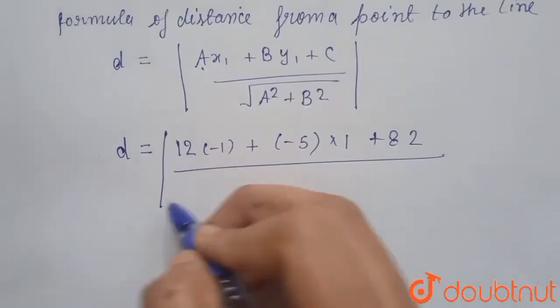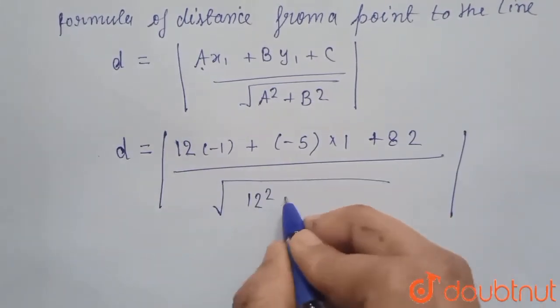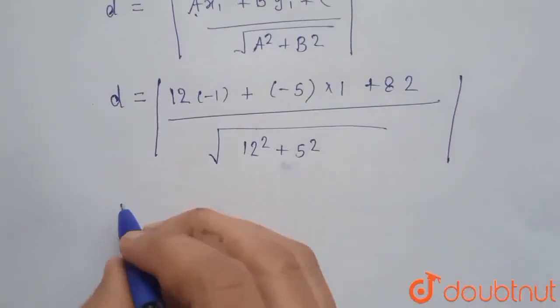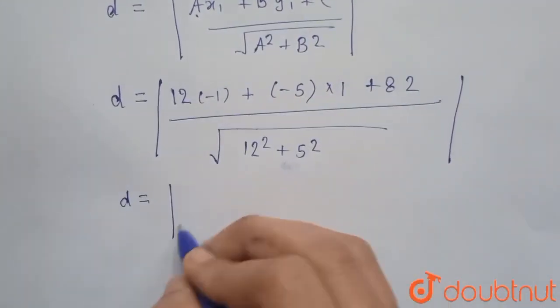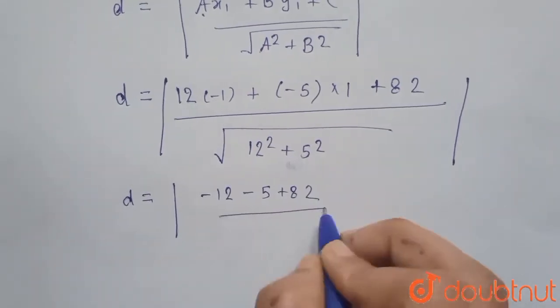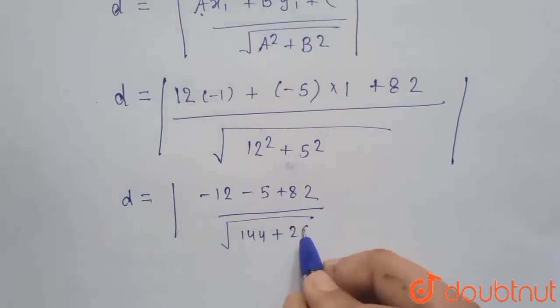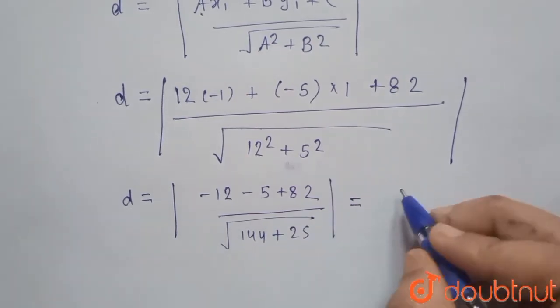under root A² which is 12² plus 5². We get d equals to -12 minus 5 plus 82 upon this will become 144 plus 25.